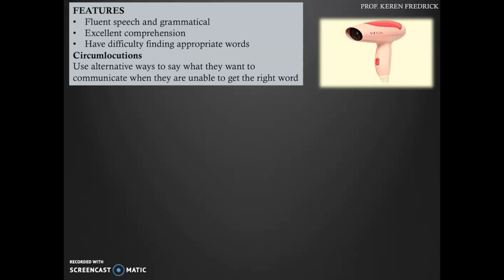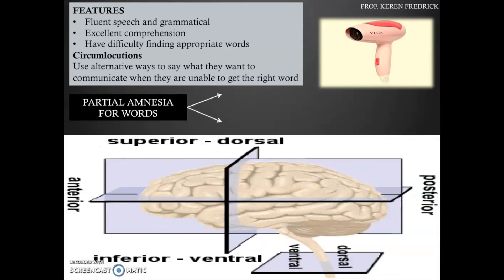Anomia can be seen as a partial amnesia for words, which can happen because of lesions in the anterior regions of the brain or in the posterior regions of the brain. The anterior regions are right here and the posterior regions are right here.